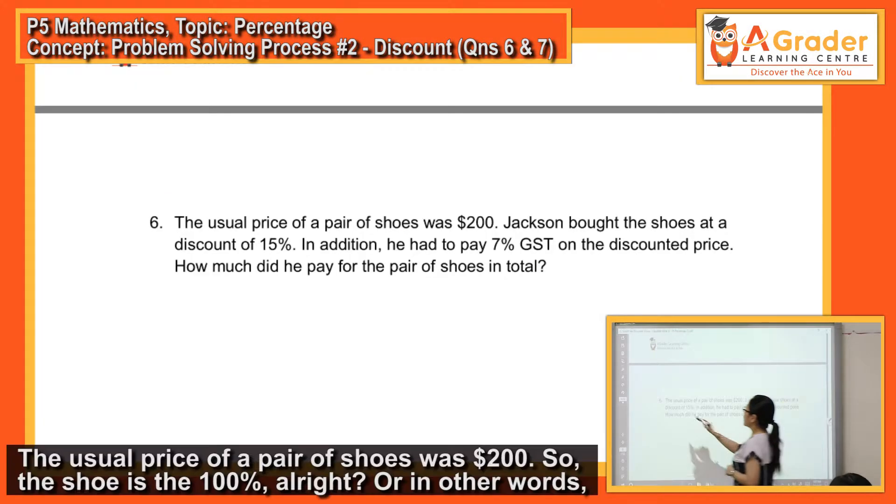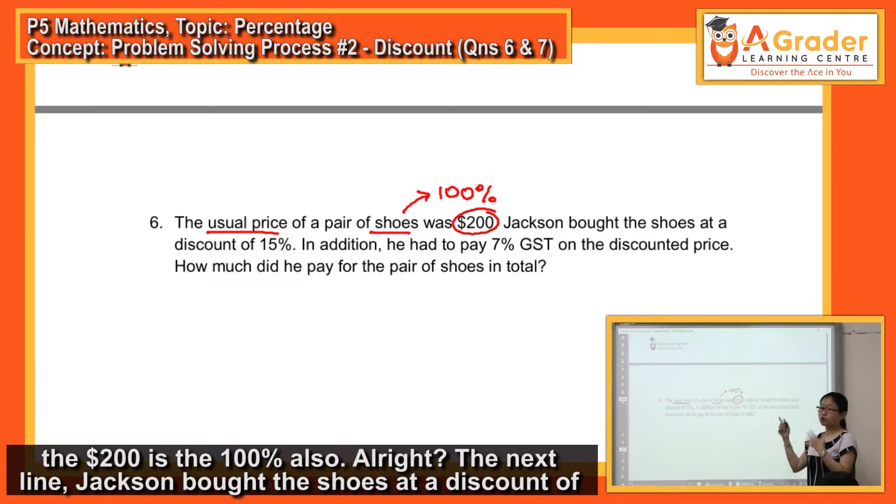Alright, the usual price of a pair of shoes was $200. So, the shoe is the 100%, or in other words, the $200 is the 100% also.